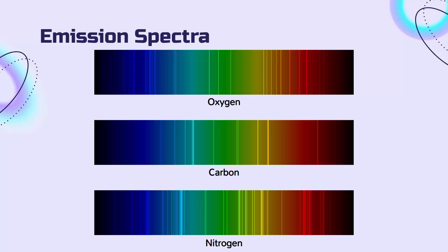For example, here are the emission spectra of oxygen, carbon, and nitrogen. Each of them has many more possible frequencies emitted than hydrogen because they're more complex atoms. What's important to note is that they are all unique. Just like forensic scientists can identify a person by their unique fingerprints, a physicist can identify the presence of an element based on its emission spectrum.